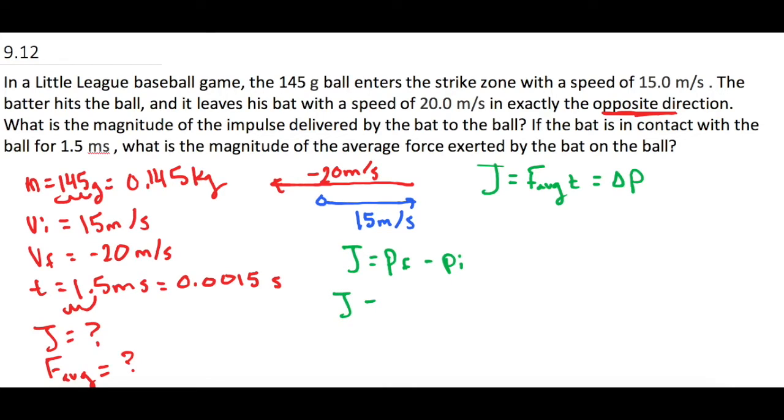Now let's plug in numbers because we're already solved for what we're looking for. P is mass times velocity, so the mass is 0.145 kilograms times the final velocity, negative 20 meters per second, and all of that is being subtracted by mass 0.145 kilograms times the initial velocity, 15 meters per second.